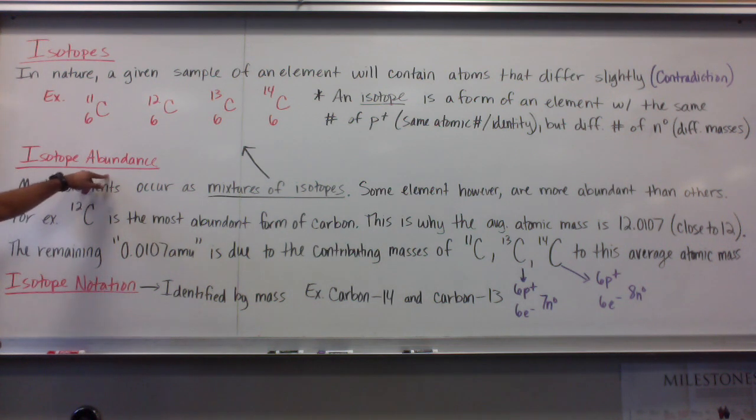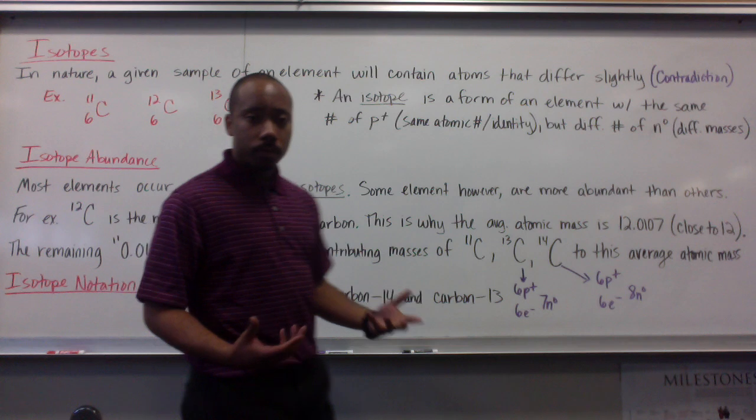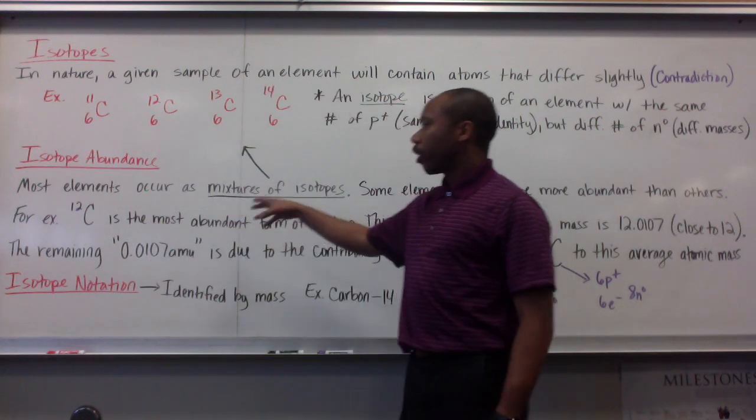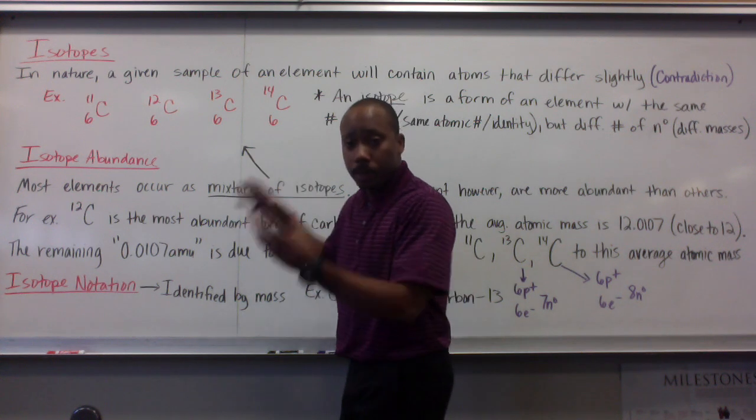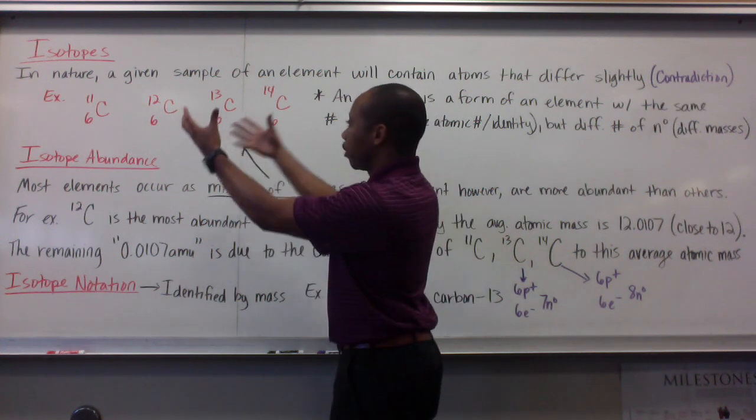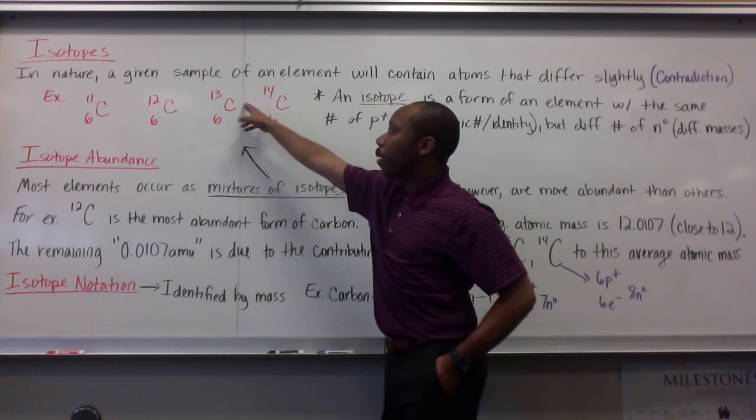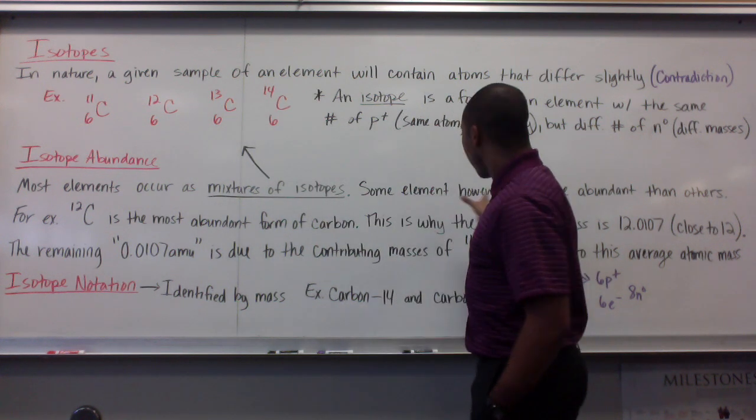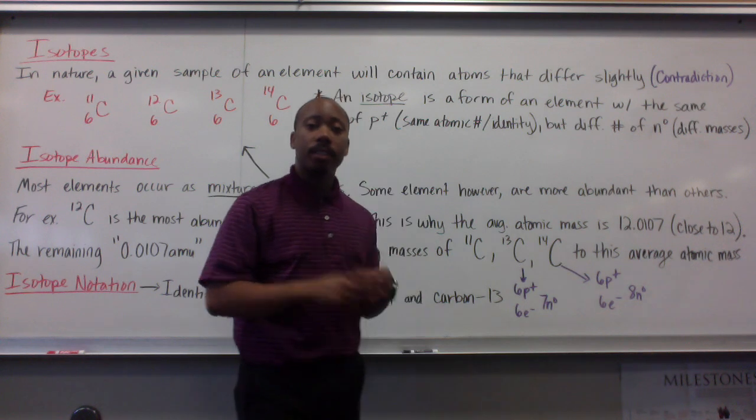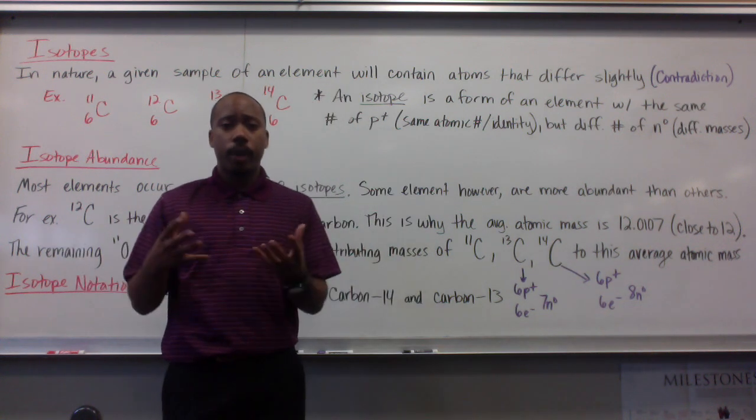Now, let's talk about isotope abundance. Now, in nature, most elements occur as mixtures of isotopes, like we see here. If I picked up a sample of carbon, I'd have a mixture of isotopes. Carbon 11, carbon 12, carbon 13, carbon 14. Now, some elements, however, are more abundant than others, meaning they occur in greater amounts.